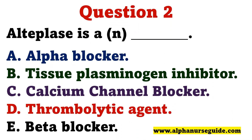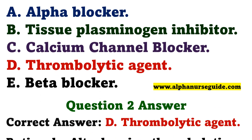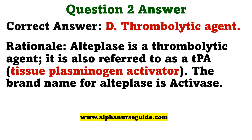Practice question: Alteplase is a ___. A. Alpha blocker. B. Tissue plasminogen inhibitor. C. Calcium channel blocker. D. Thrombolytic agent. E. Beta blocker. The correct answer is D — thrombolytic agent. Alteplase is a thrombolytic agent, also referred to as a TPA. The brand name for Alteplase is Activase.